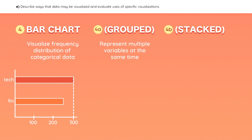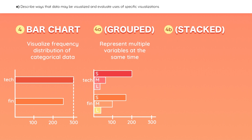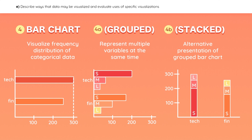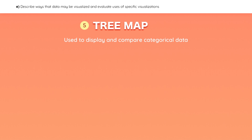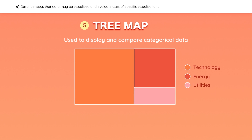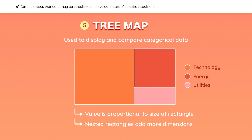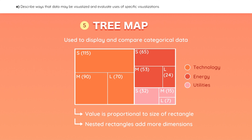Grouped bar charts represent multiple variables at the same time — for example, we can subdivide the stocks in each sector into small-cap, mid-cap, and large-cap companies. An alternative way to represent this same data is with a stacked bar chart, which places the subgroups on top of each other rather than next to each other. Tree maps are used to display and compare categorical data. They are made up of colored rectangles, and the value of each category is proportional to the size of its rectangle. Tree maps can include nested rectangles to add more dimensions — for example, nested rectangles representing small, medium, and large-cap stocks within each sector.